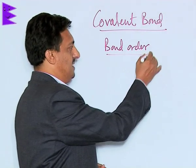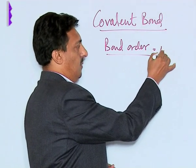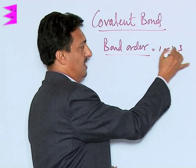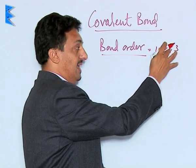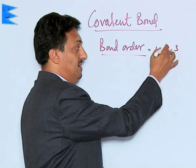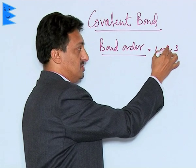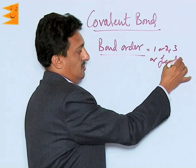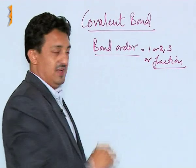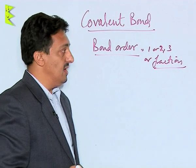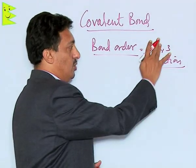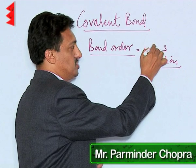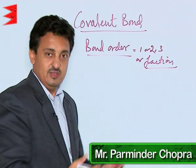The bond order can be 1, 2, or 3, and it can be a fraction also. It will be a fraction in the case of those molecular species which are showing a phenomenon called resonance.